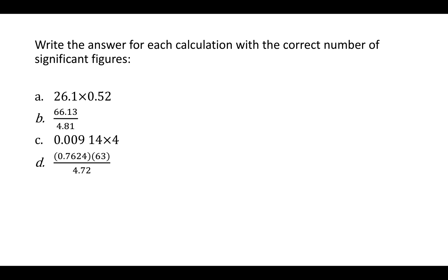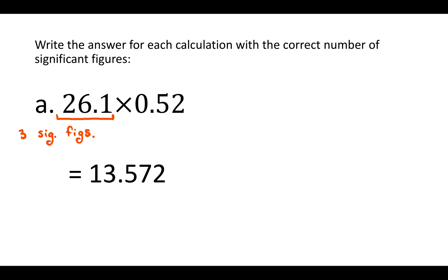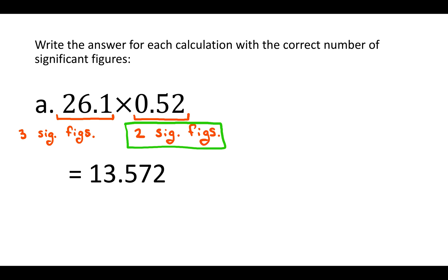The question says: write the answer for each calculation with the correct number of significant figures. Take the two numbers and plug them into a calculator — you should get 13.572. Now go back to your numbers and ask yourself how many significant figures are in each whole number. In this first number there are three significant figures. In the second number there are only two significant figures. Remember, zeros to the left of non-zero numbers are never significant. So the less precise measurement — the one with fewer significant figures — is 0.52, which has only two significant figures. That's how many sig figs we want our answer to have.